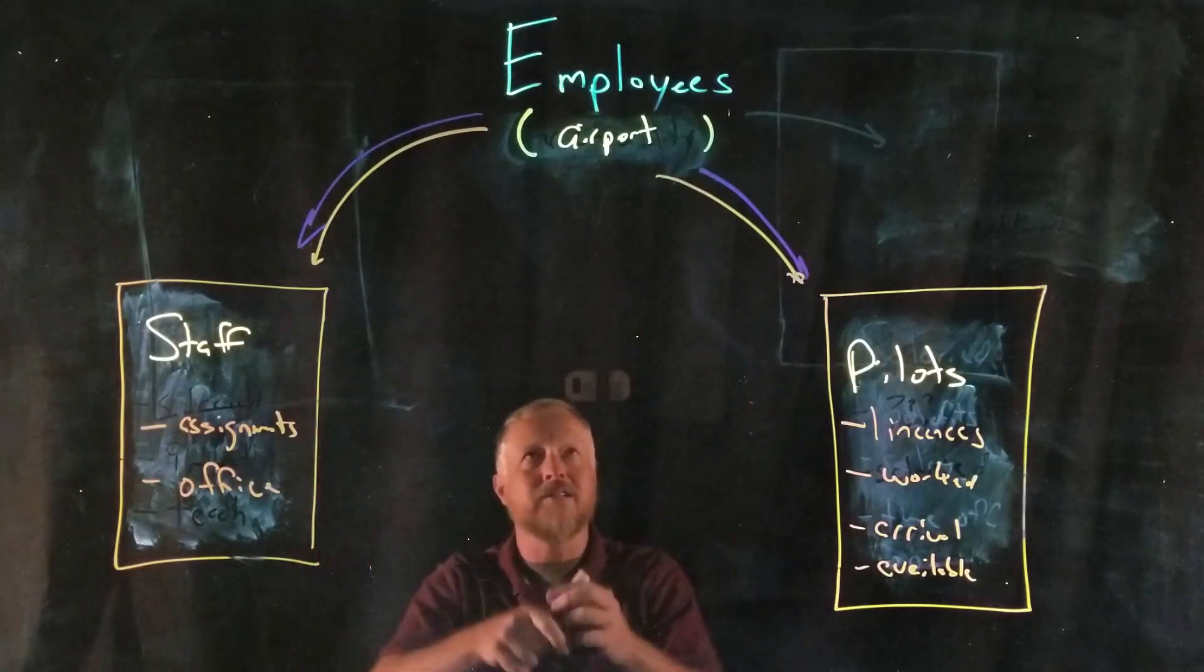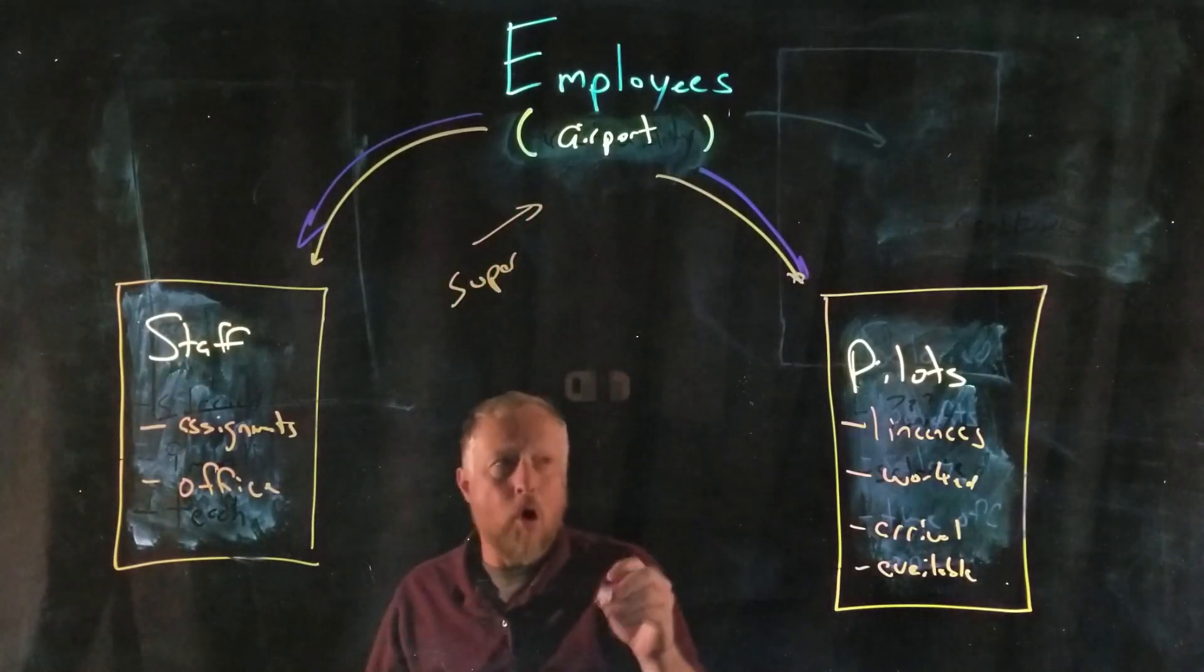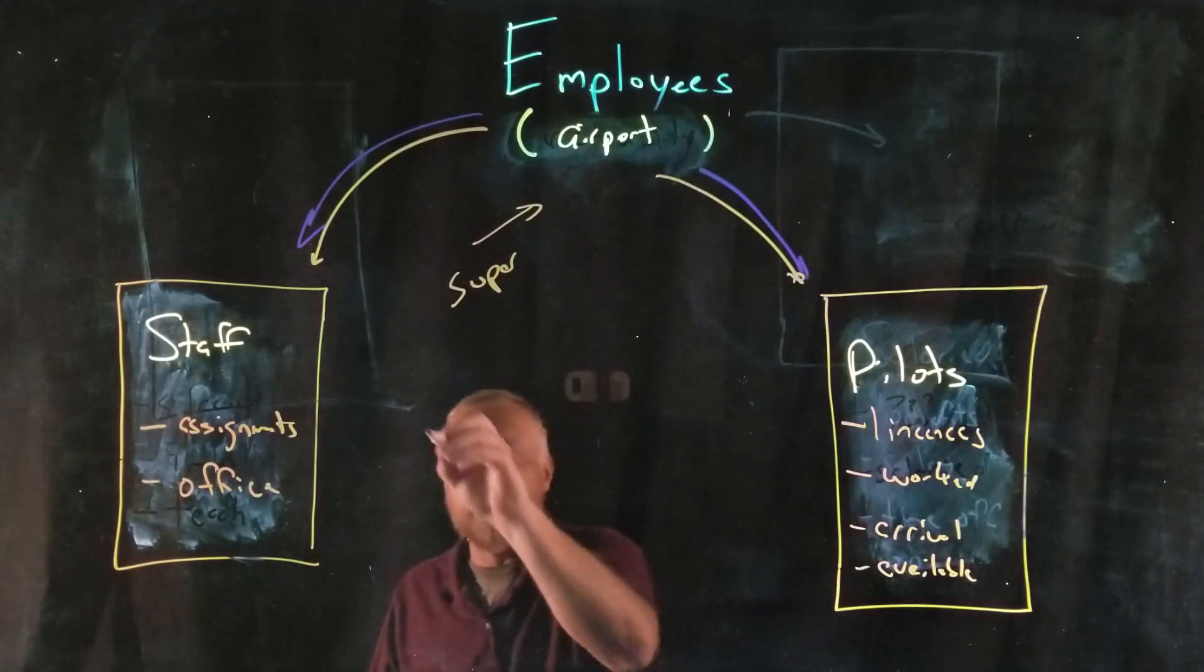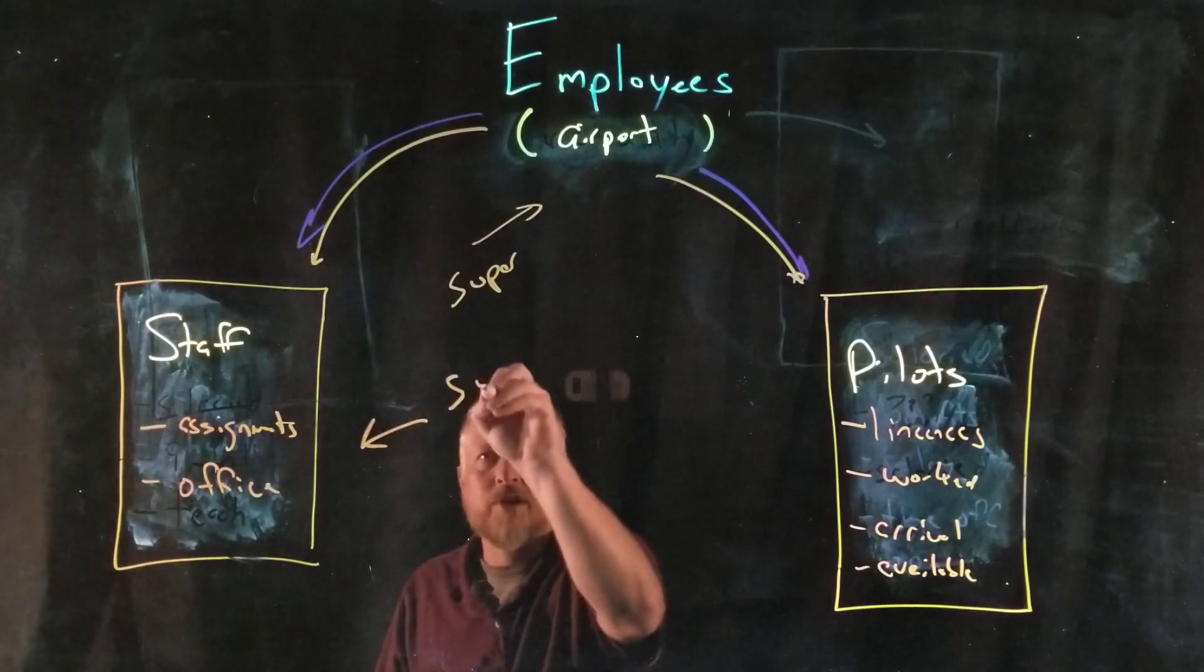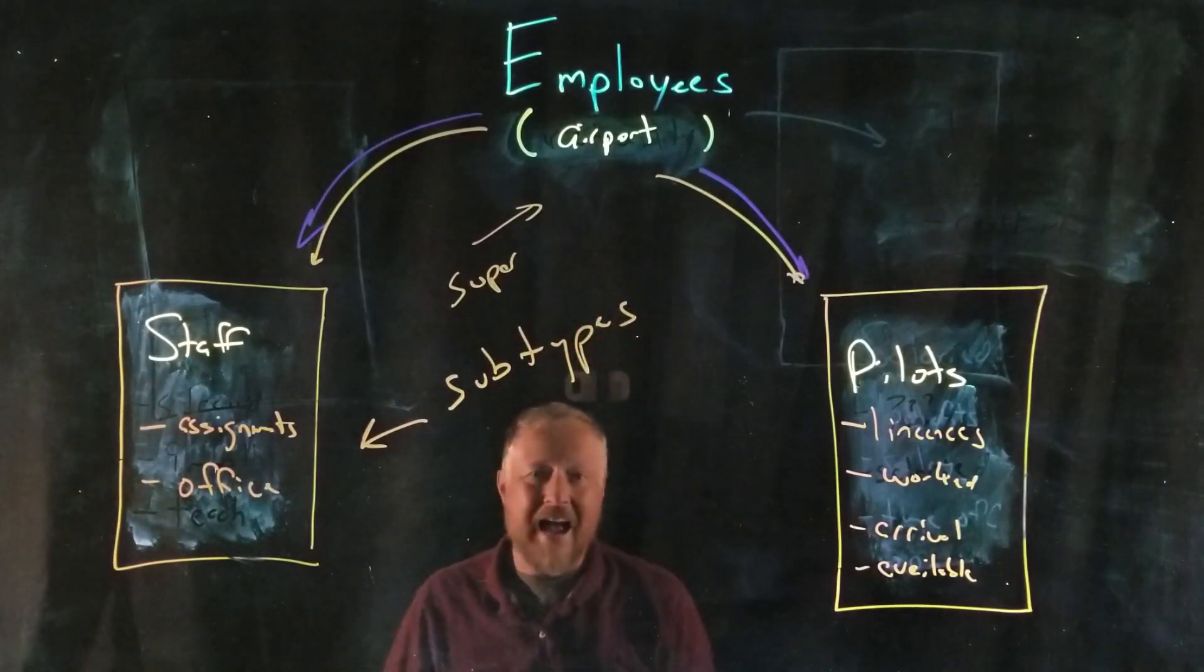So when we break this down, employee is going to be our supertype. And then the ones at the bottom here are going to be our subtypes. Very similar to what we had in inheritance.